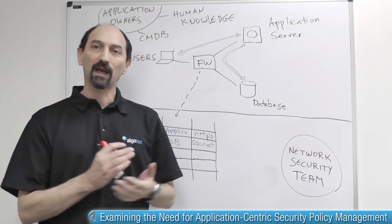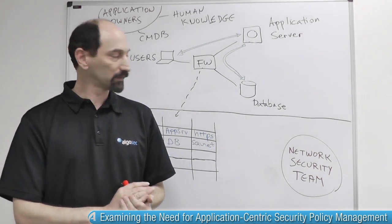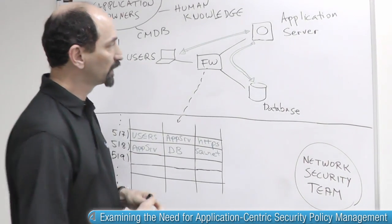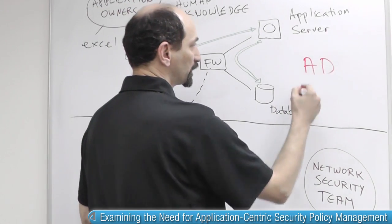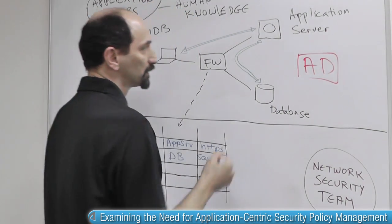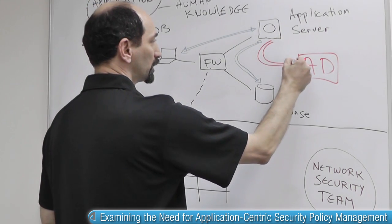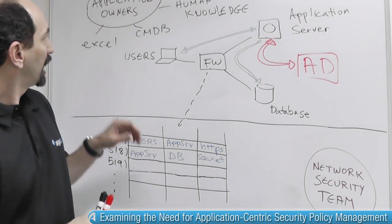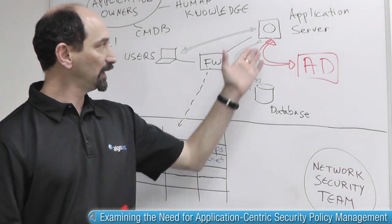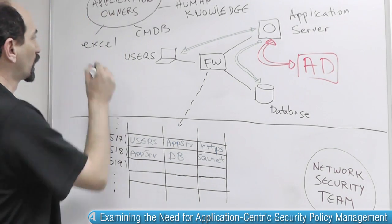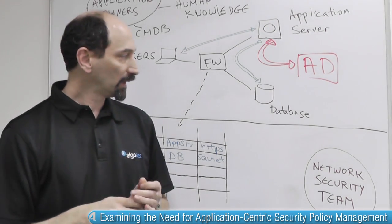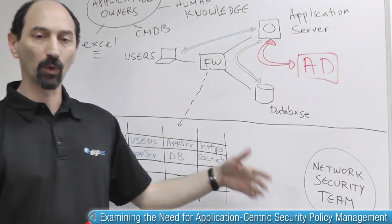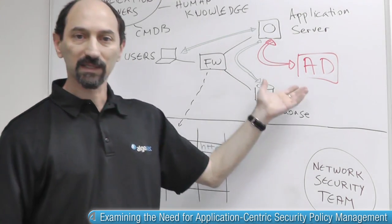Now imagine what happens when there is a change that is required. Imagine that there's a new version of the application that also needs to integrate with the organization's Active Directory. So there is going to be a new connectivity pattern from the application server to the Active Directory. From the application owner's point of view, they know that they need this, so they would record it into their Excel spreadsheet and they would need to make a request from the network security team — they would open a change request to make this happen.